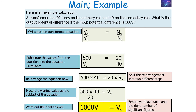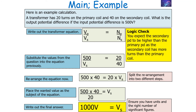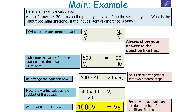It's always important after a calculation to do a logic check. You'd expect the secondary potential difference to be higher than the primary, as the secondary coil has more turns than the primary. You can also check the ratios: going from 20 to 40 turns, the value has doubled, so the potential difference also doubles from 500 to 1000 volts. Always write out your equation, substitute values in, clearly show your rearrangement, and make your final answer clear with correct units and significant figures.